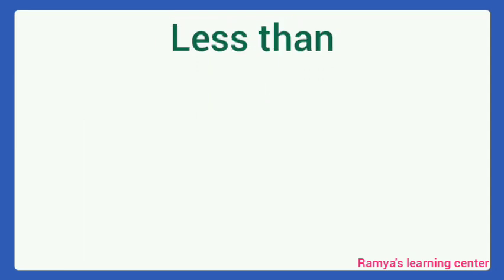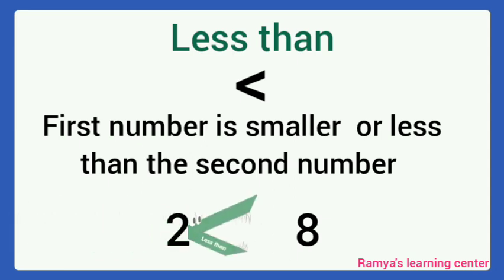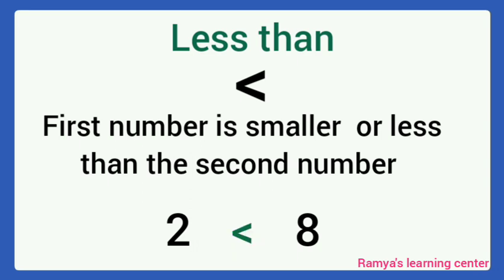Next, less than. This is the symbol. Here, the first number is smaller or less than the second number. For example, 2 and 8. Here, 2 is smaller than 8. So, the alligator opens to number 8 because it is bigger. We put the same symbol. It is less than.